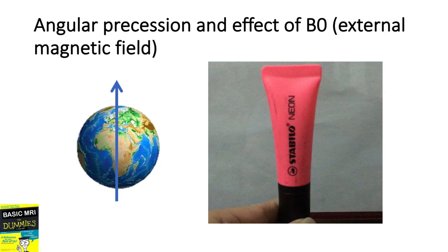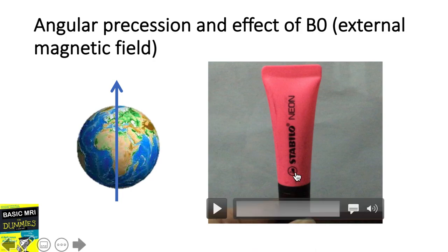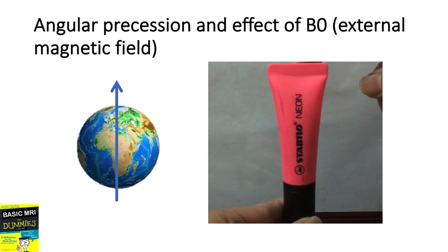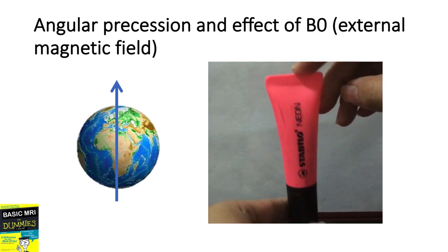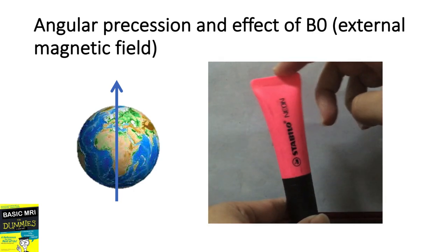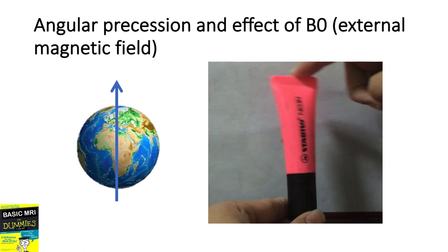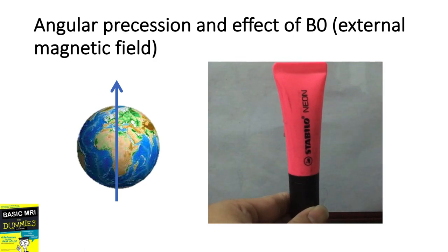These tiny protons would spin in their own axis, just like tiny tops. The way they spin is called their angular precession, or how they wobble.